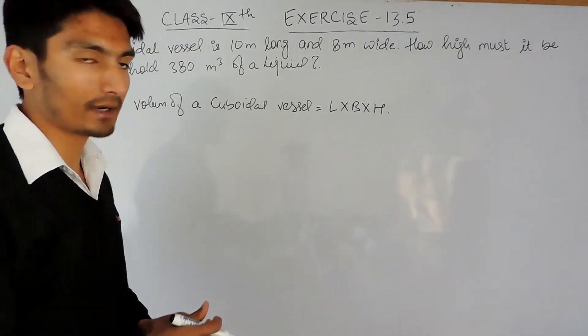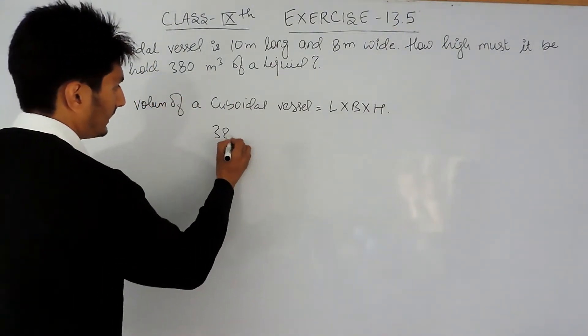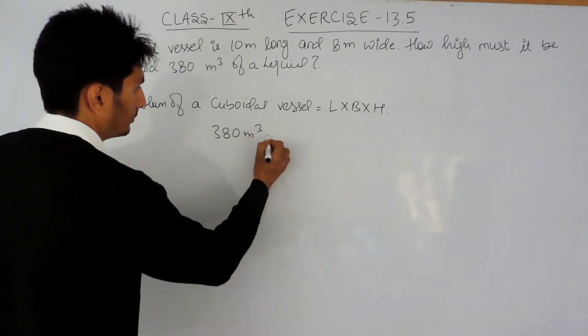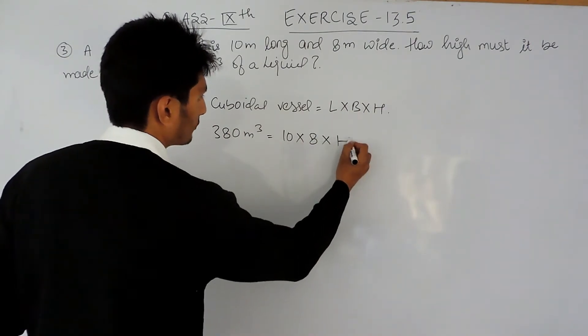The volume of the cuboid is given as 380 meter cube. Length is given as 10 meters, breadth is 8 meters, and we have to find its height.